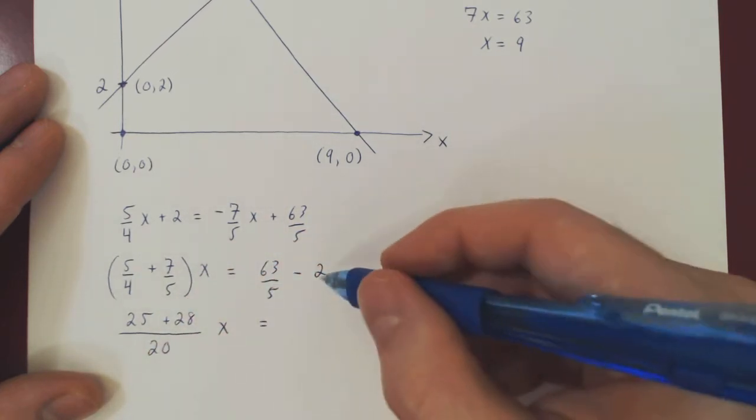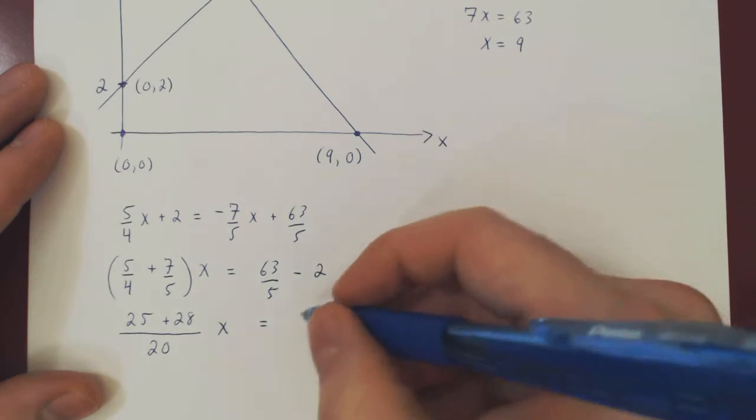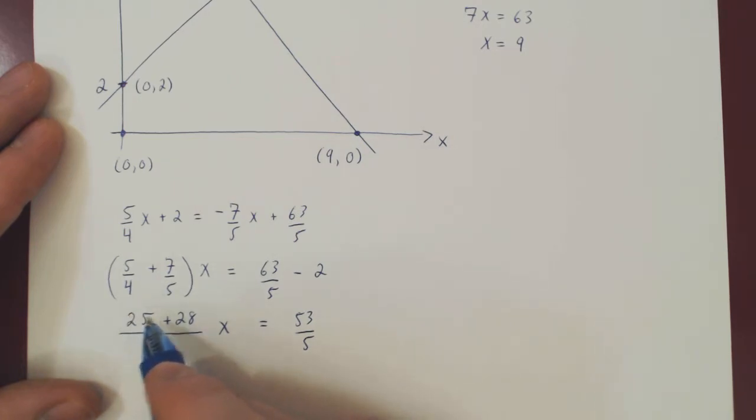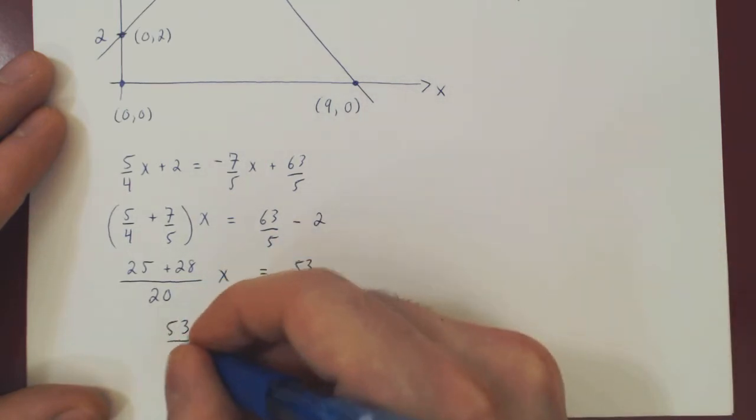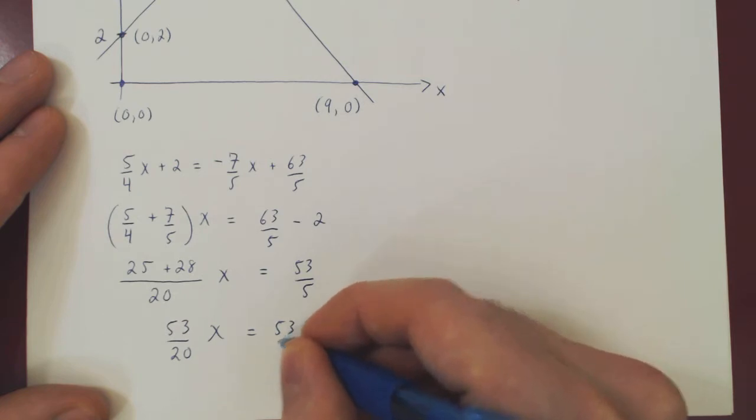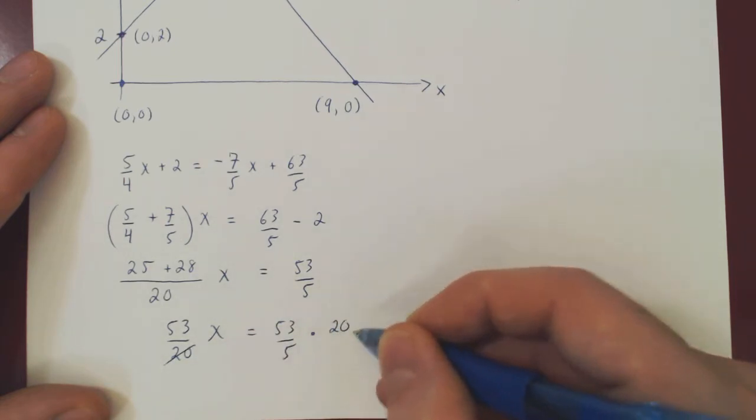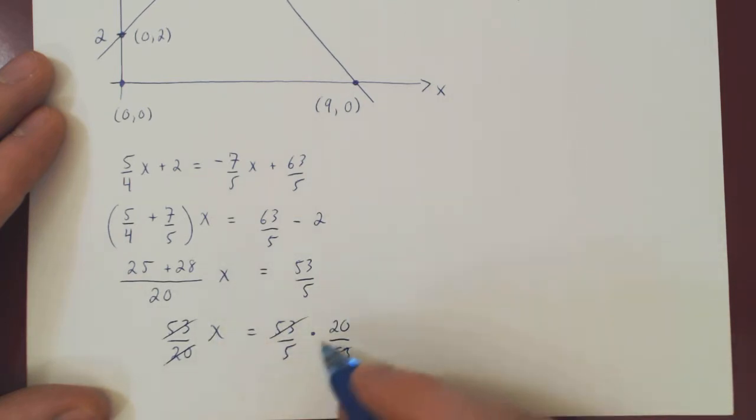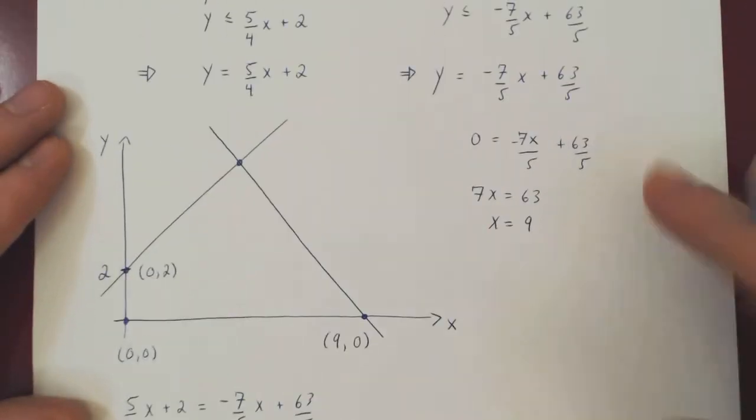We'll put both over a common denominator. So we'll have 25 plus 4 times 7 is 28 over 4 times 5 which is 20, times x equals, this one is simpler, 2 is 10 over 5, 63 minus 10 is 53, so 53 over 5. If you notice, 25 plus 28 is 53, so we get 53 over 20 times x equals 53 over 5. Multiply both sides by 20, divide both sides by 53, and you're left with x being equal to 20 over 5 which is obviously 4. And so now we have the x coordinate of our vertex, x equals 4.